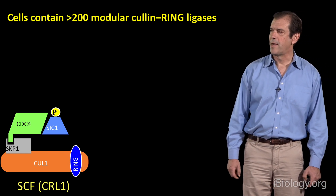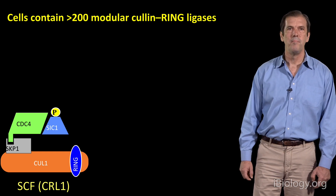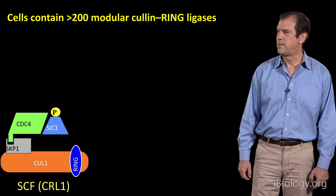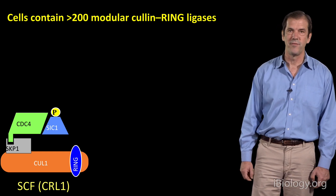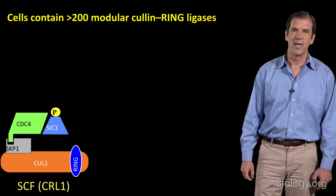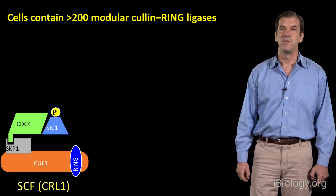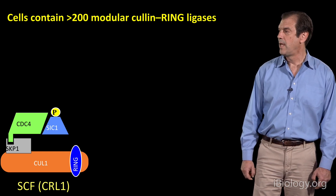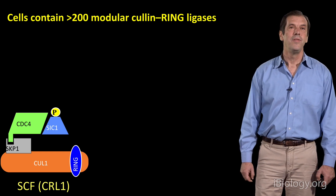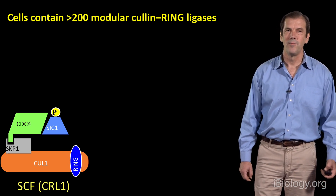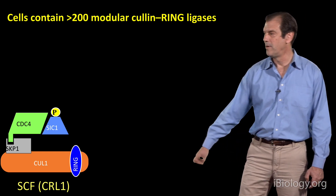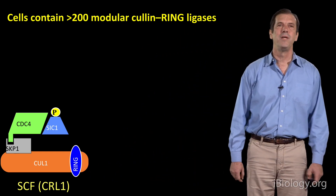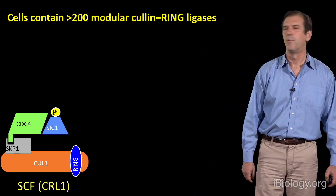The combinatorial process is illustrated by the first member of this family, known as the SCF-CDC4 complex. It was discovered in budding yeast in the study of DNA replication, but we now know it is present throughout eukaryotes and is involved in many different types of functions. The first set of these cullin ring ligases are known as SCFs, also known as CRL1 enzymes, and the other members of the family are known as CRL2, 3, 4, and so forth.